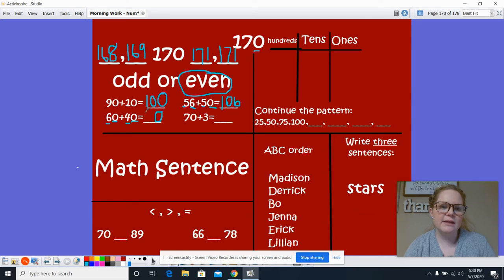70 plus 3 equals 73. Let's do 120 plus 50 equals 170.